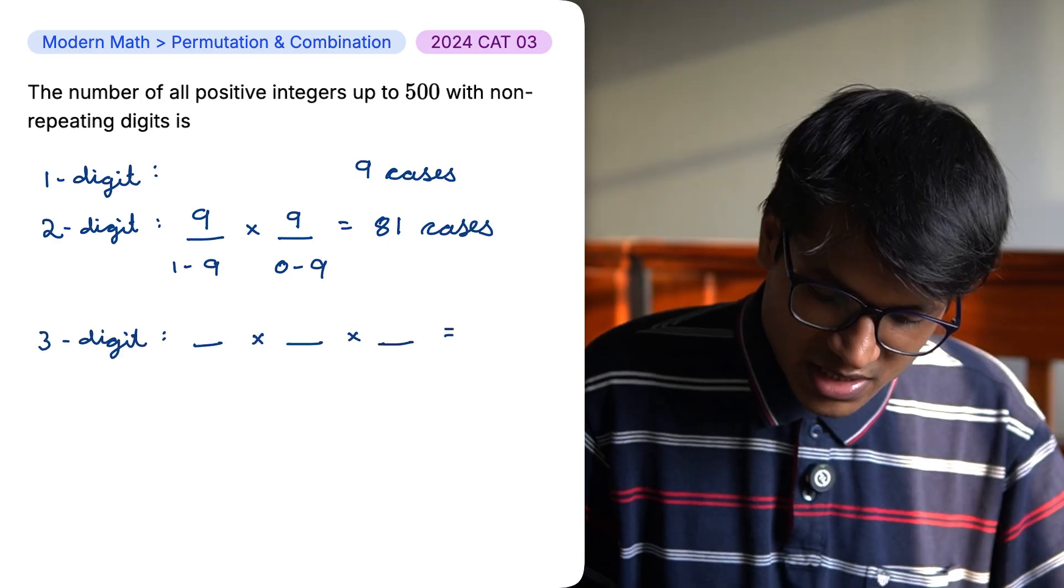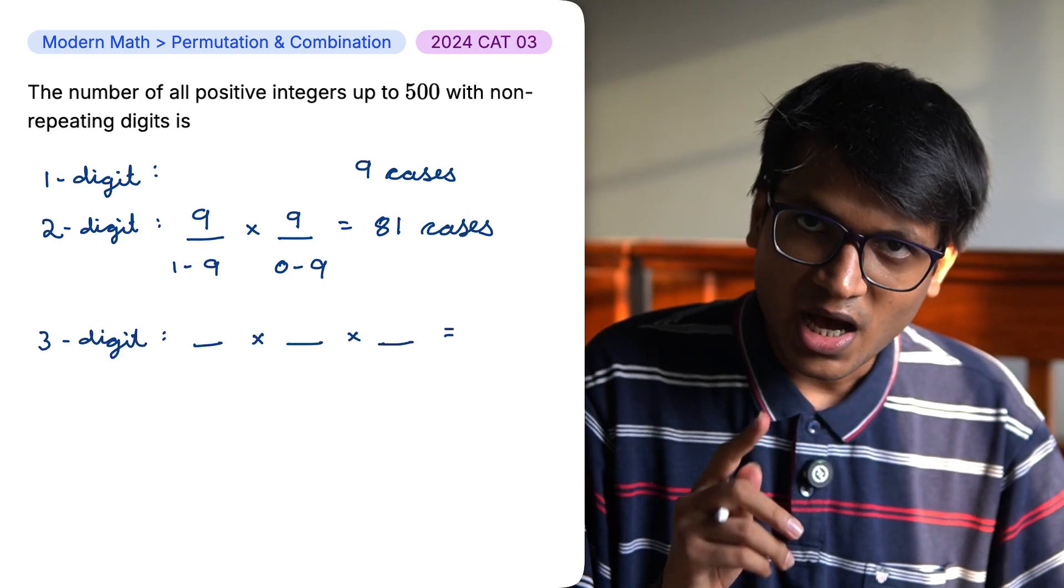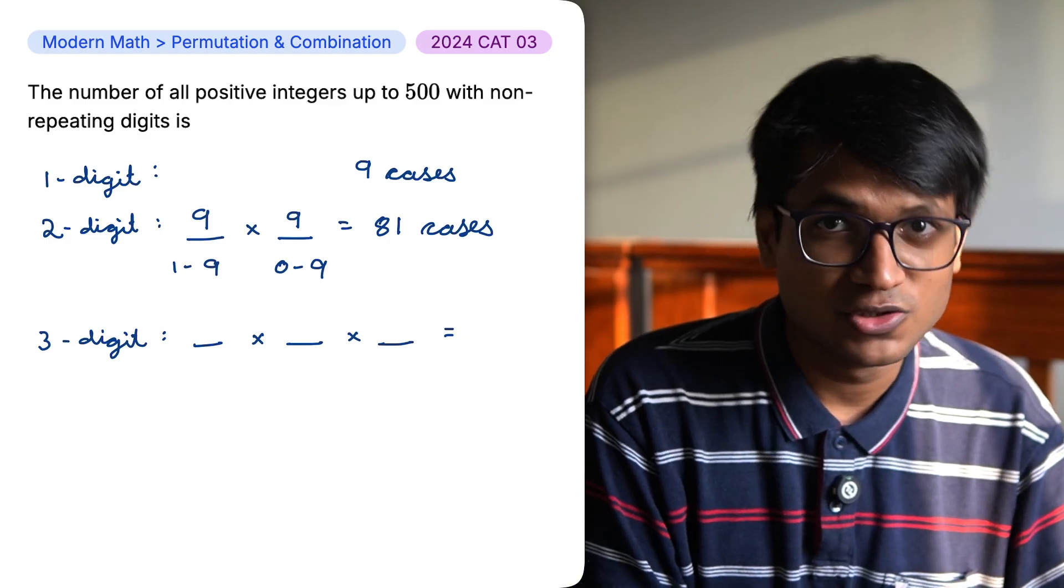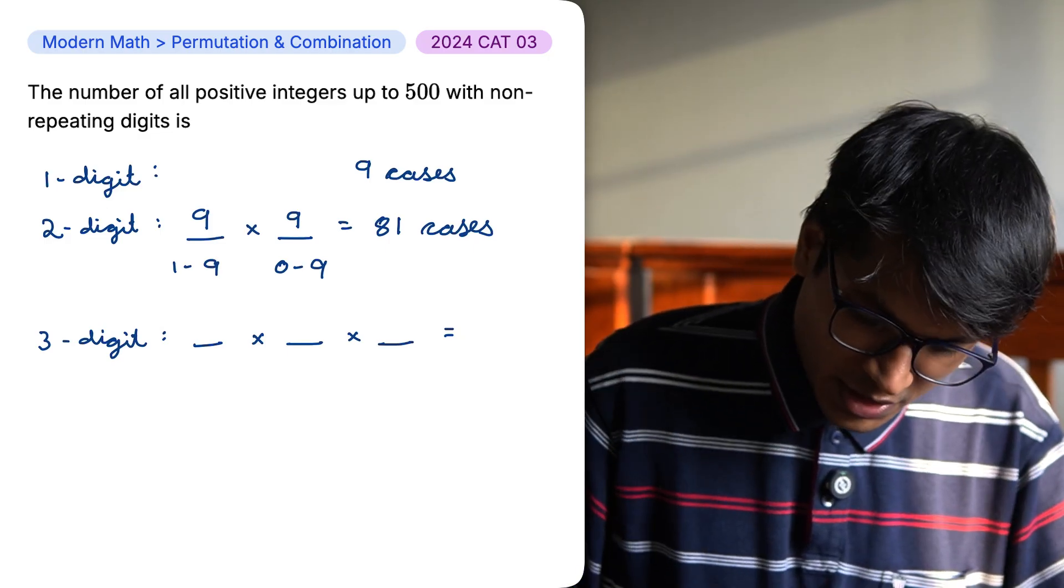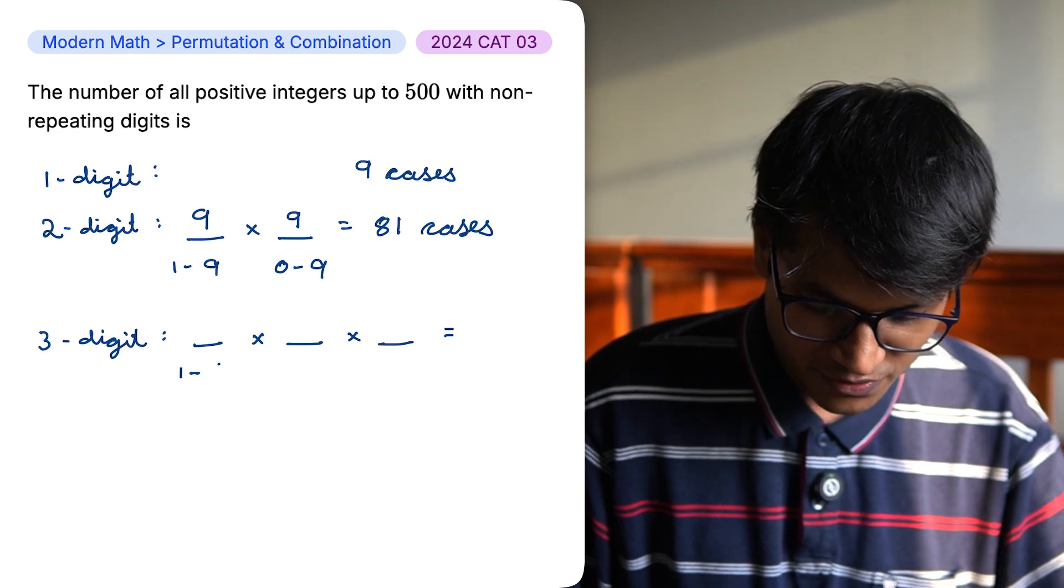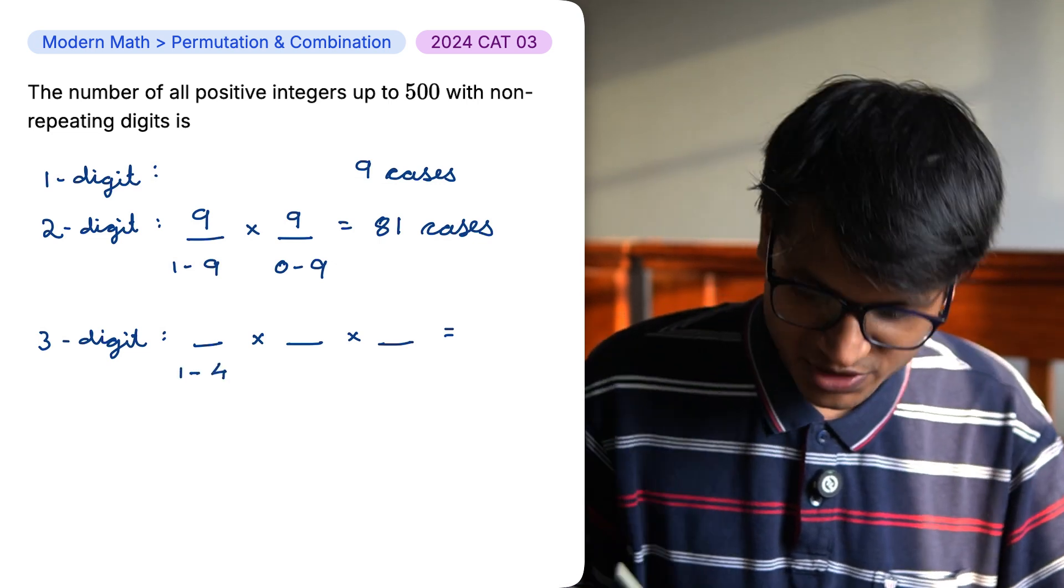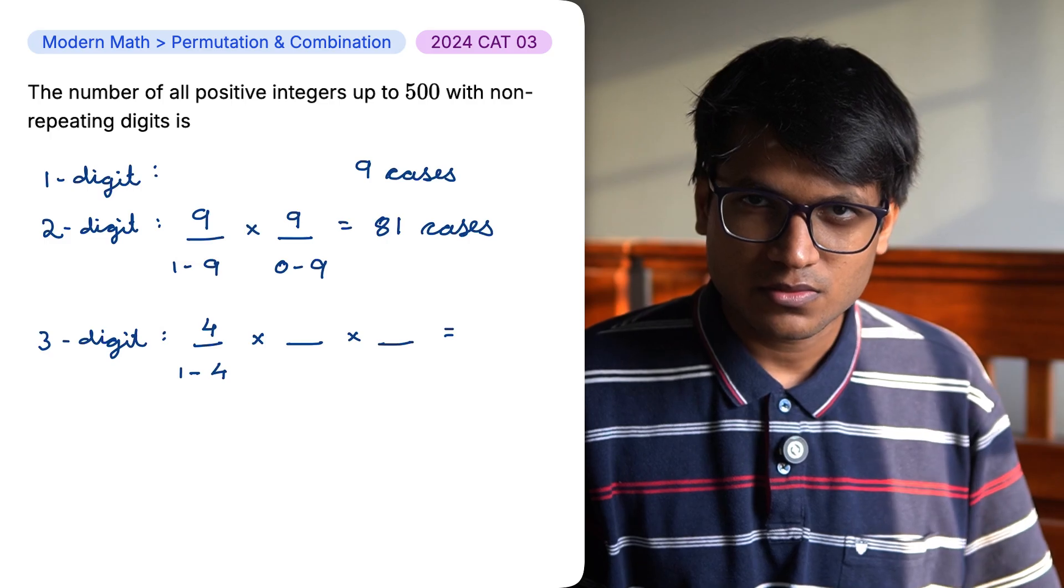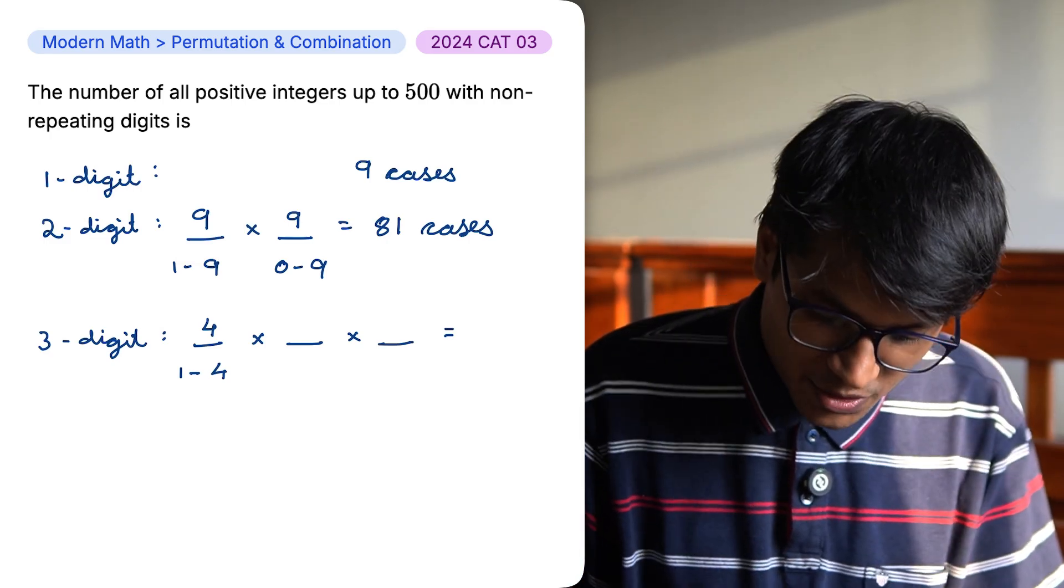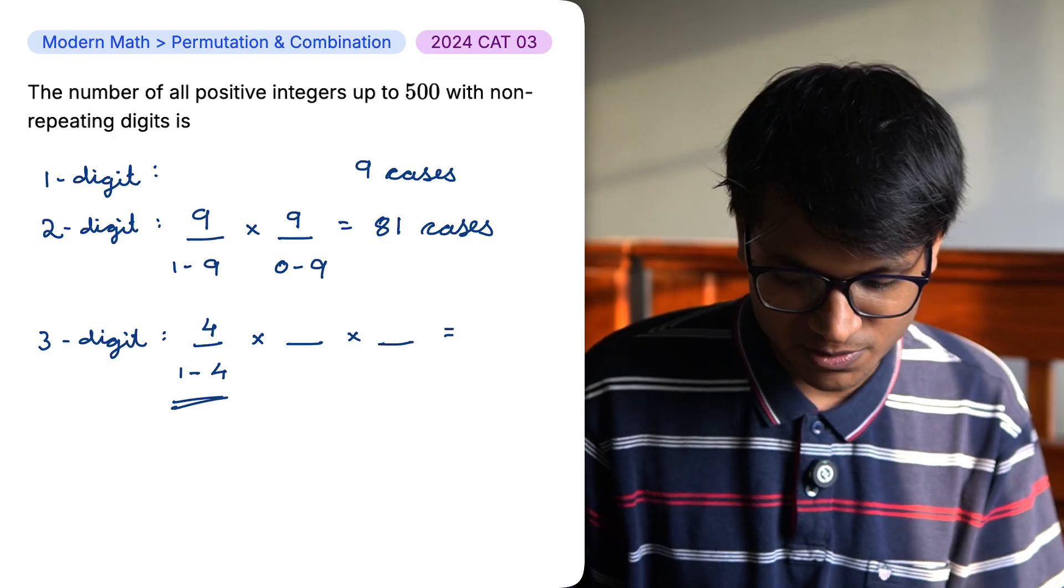Now let's look at three digit numbers. In the hundreds place, I need a number that is up to 500. Can 500 be a number? No. 0 is repeating. So in the hundreds place, I can put 1, 2, 3, 4. So I have only four options there. In the tens place, I can put 0 to 9. I have 10 options. But I'll be using one of the numbers in the hundreds place.